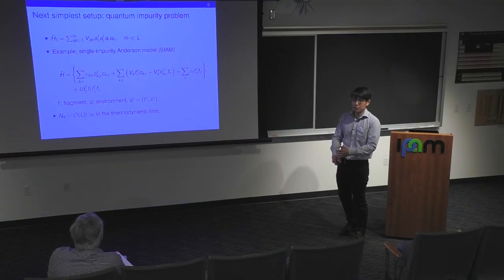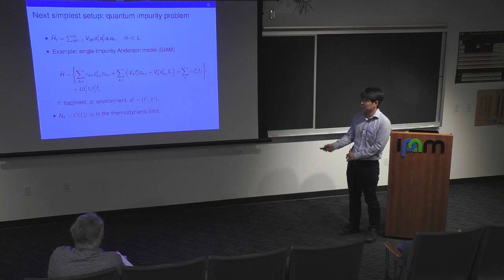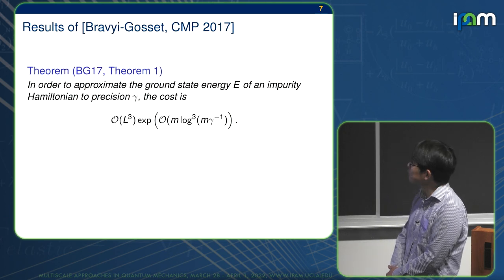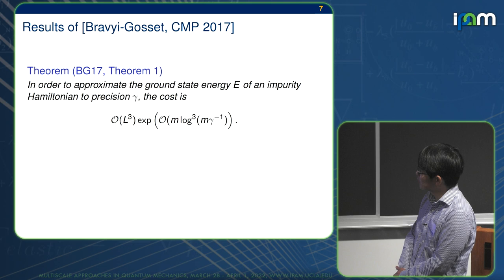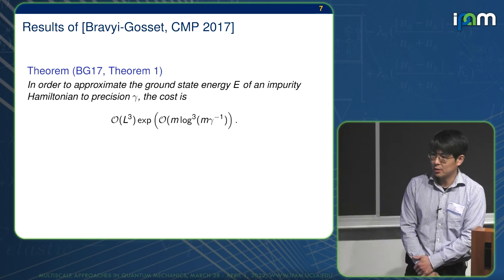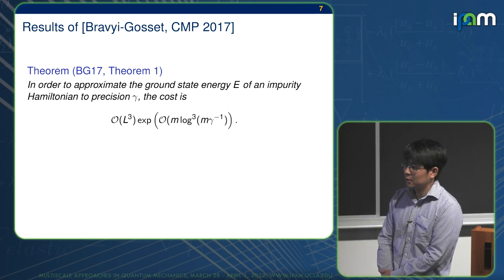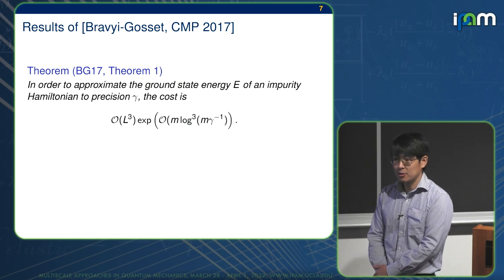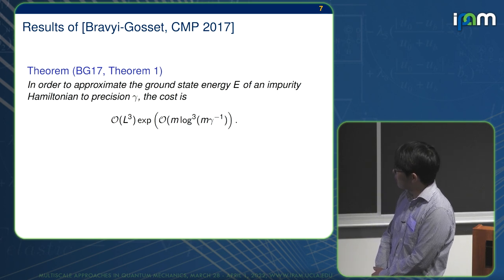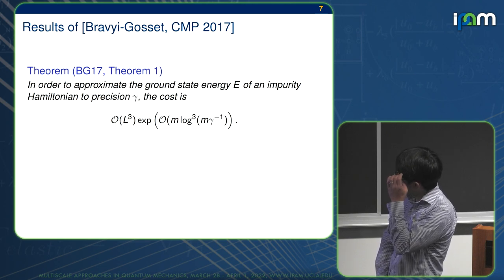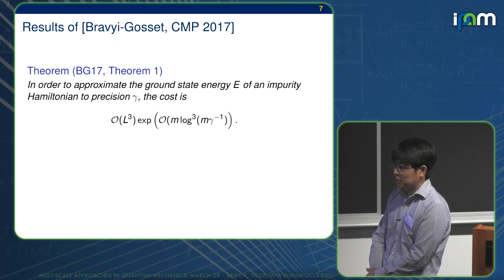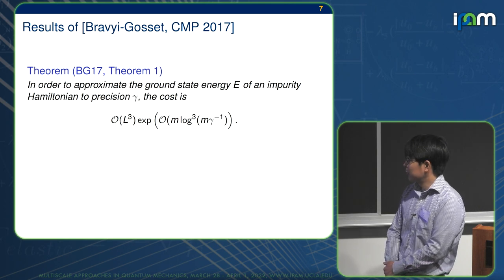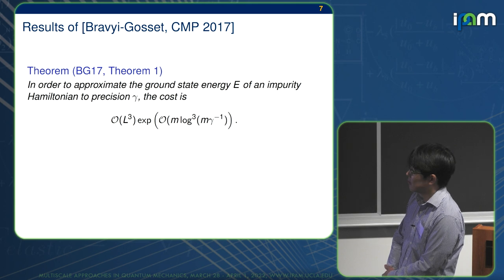This is called the impurity model, but still, it can have a macroscopic number of electrons. So this number of electrons can be O(L), and when L goes to infinity, this goes to the thermodynamic limit. This is a paper by Bravi and Gosset in Communication Mathematical Physics paper in 2017. It's one of the very, very few rigorous results in this field, and it's a remarkable paper. So it has several theorems. I'm only talking about one of them. They ask the following question: you want to approximate the ground state energy of impurity Hamiltonian to precision gamma. What is the computational cost?